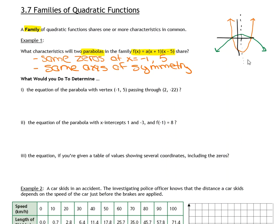Next question. What would you do? So for this question what we're going to talk about is just what would you do? We're not actually going to finish the question. What would you do to determine the equation of the parabola with a vertex at (-1, 5) and it passes through (2, -22). So you have a question in your homework and it says how do you get the equation? How would you determine the equation?